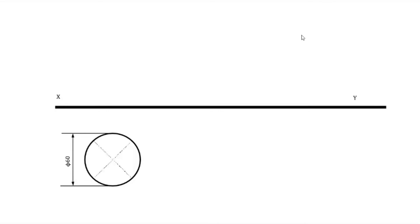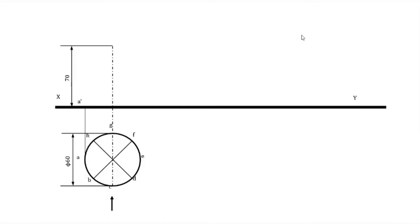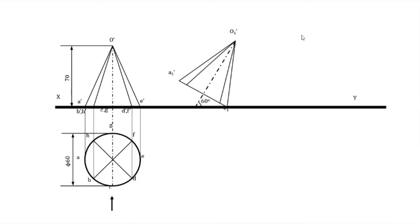First, draw the XY line. In the top view, the diameter is 60 mm. All eight points are marked; all four diameters are present. The height (axis) is 70 mm — mark point O-dash. Mark all those points, and the front view is completed. This is the same as the previous condition; only the dimensions are different.